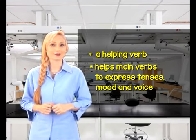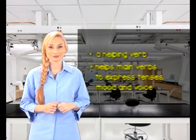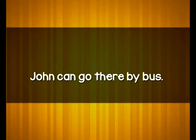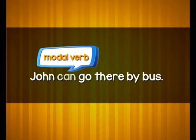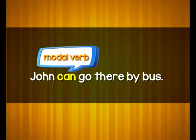Take a look at this diagram. In this sentence, we see that the modal verb 'can' comes before the main verb 'go'. Its function here is to show ability. In other words, 'can' has helped us to know that John is able to take a bus to his destination.